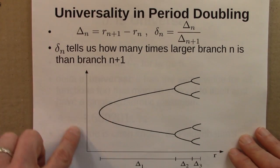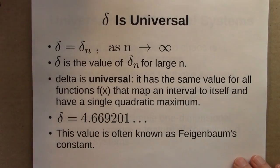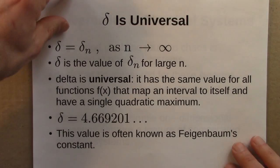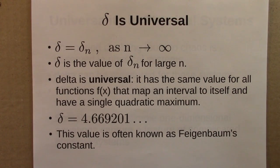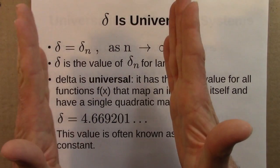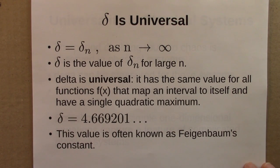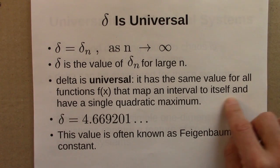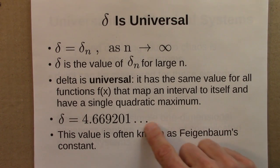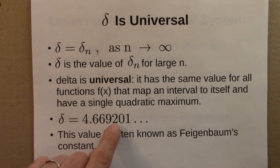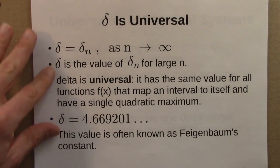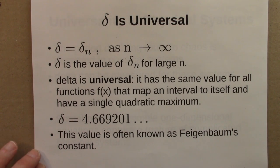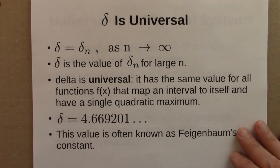And we looked at the bifurcation diagrams for some different functions. And I didn't prove it but we discussed how this quantity delta, this ratio of these lengths in the bifurcation diagram is universal. And that means it has the same value for all functions provided a little bit of fine print. They map an interval to itself and have a single quadratic maximum. So this value which is I believe known to be irrational and I think transcendental is often known as Feigenbaum's constant after one of the people who made this discovery of universality. So this is an amazing mathematical fact and points to some similarities among a broad class of mathematical systems.